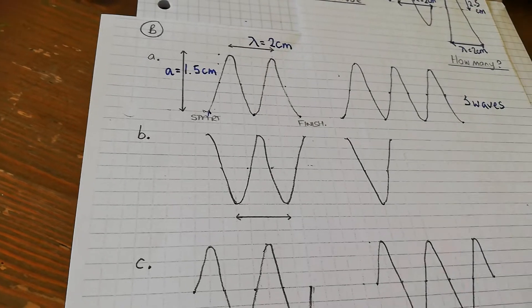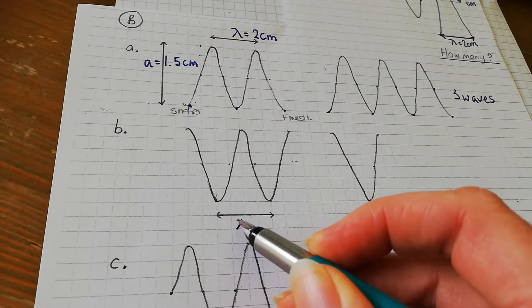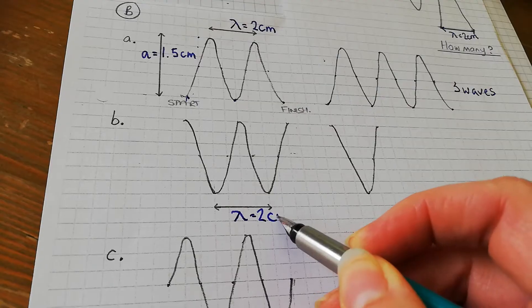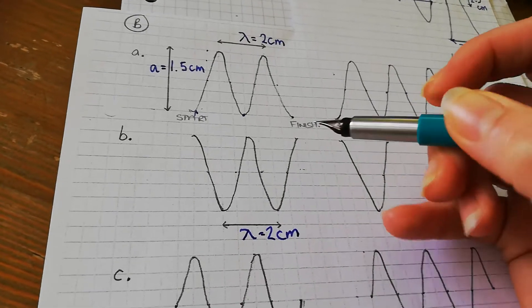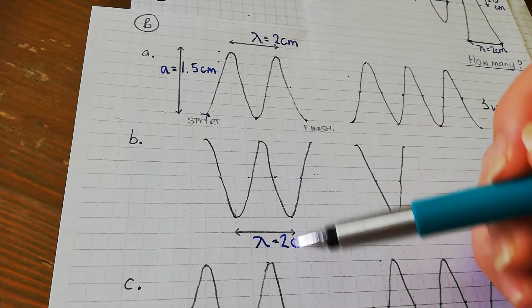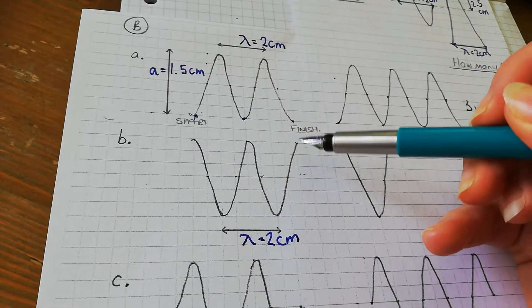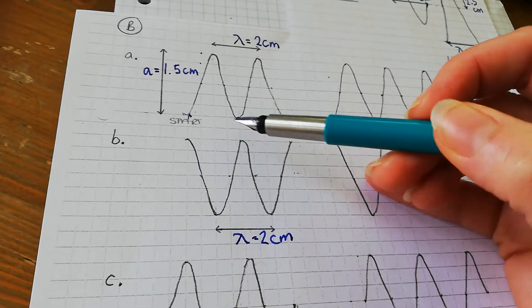Now with this one I've kept it the same, so we've still got a wavelength of two centimeters and the amplitude is still the same. But this time we're going to count from crest to crest, still two waves, one, two.